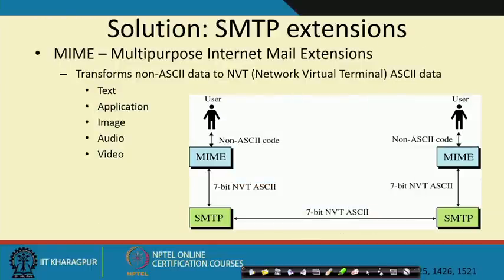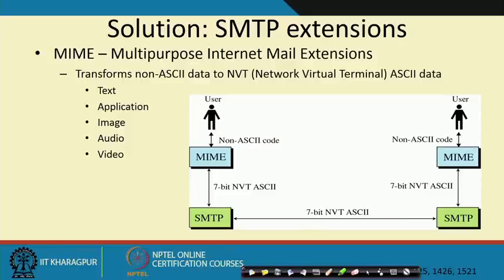There are problems with generic SMTP in that it cannot handle all sorts of data. So there is an SMTP extension called MIME — Multipurpose Internet Mail Extension — which transforms non-ASCII characters to NVT (Network Virtual Terminal) ASCII. This allows text, application, image, audio, and video to be sent via mail as attachments. Non-ASCII characters can interrupt transmission, so MIME takes care of that by converting content to 7-bit NVT ASCII, which the SMTP envelope carries as payload.